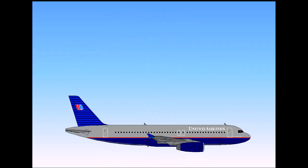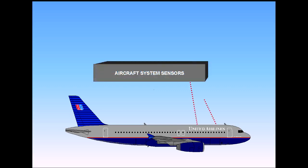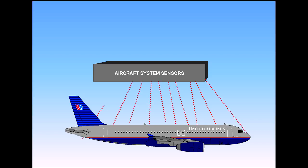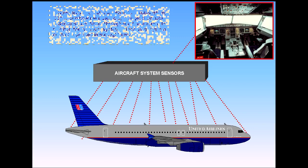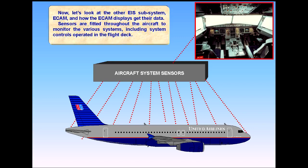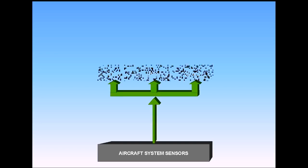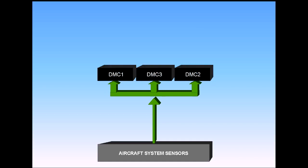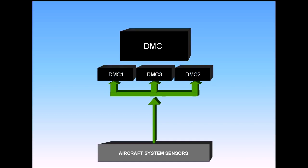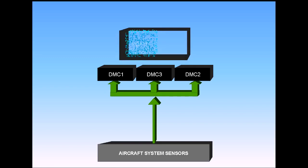Now let's look at the other EIS subsystem, ECAM, and how the ECAM displays get their data. Sensors are fitted throughout the aircraft to monitor the various systems, including system controls operated on the flight deck. Data for certain parameters — for example, fuel quantity and primary engine indications — is routed directly from the system sensors to the three DMCs. Note that there are separate channels within each DMC for ECAM and EFIS.